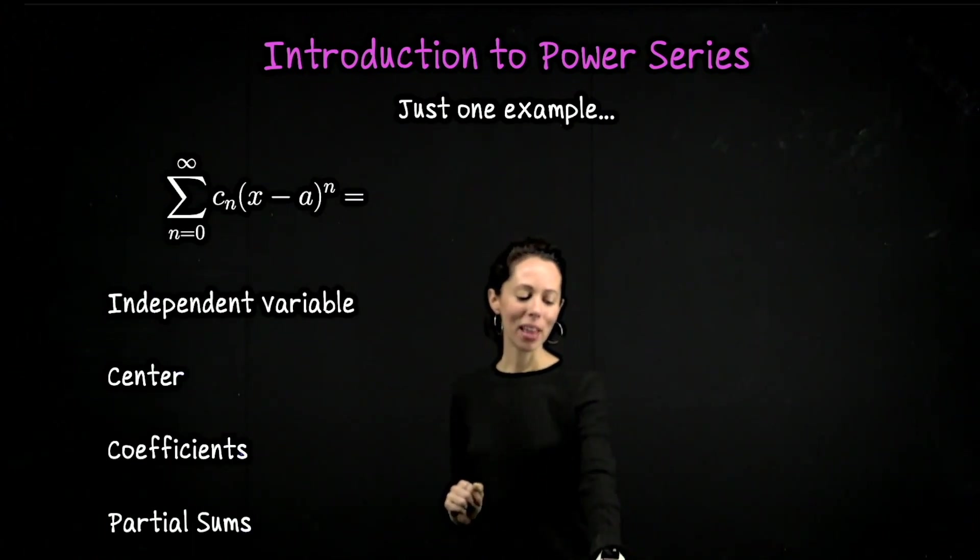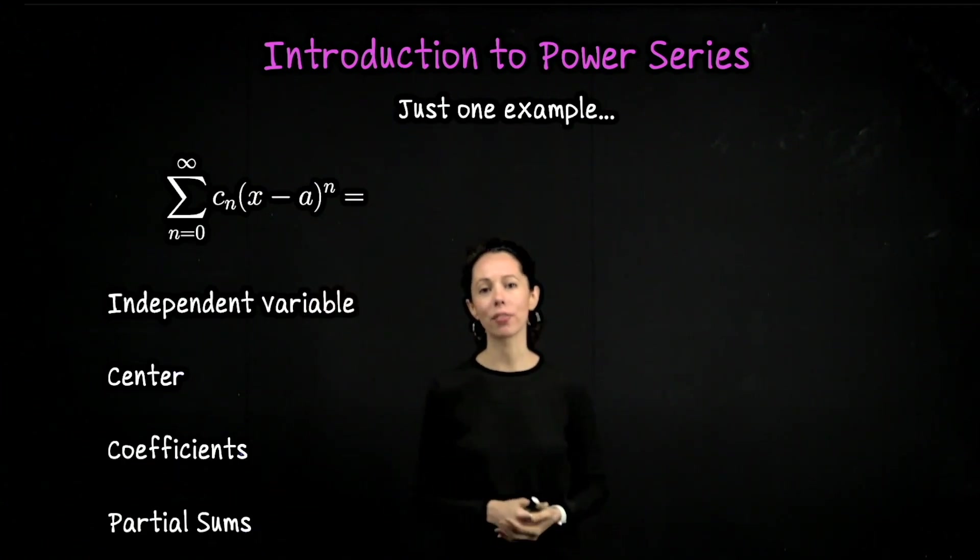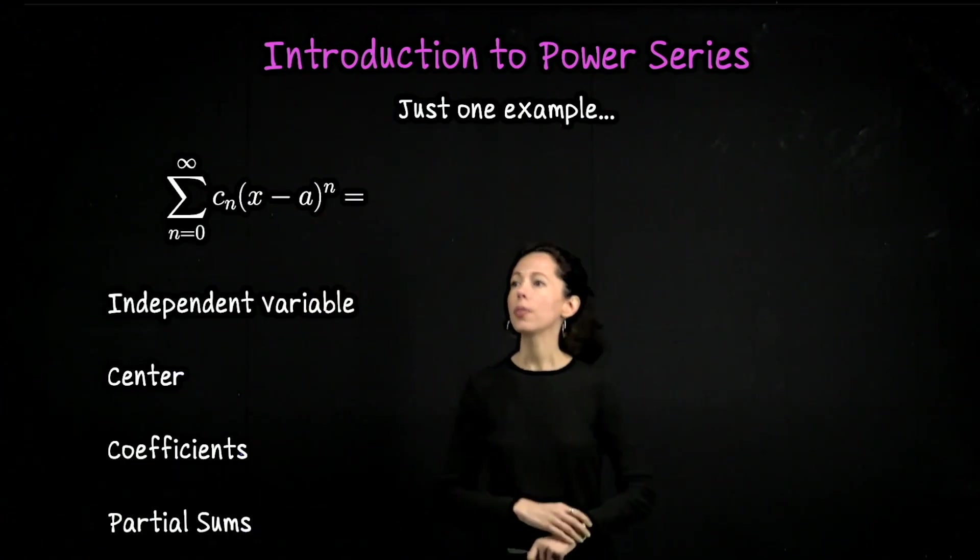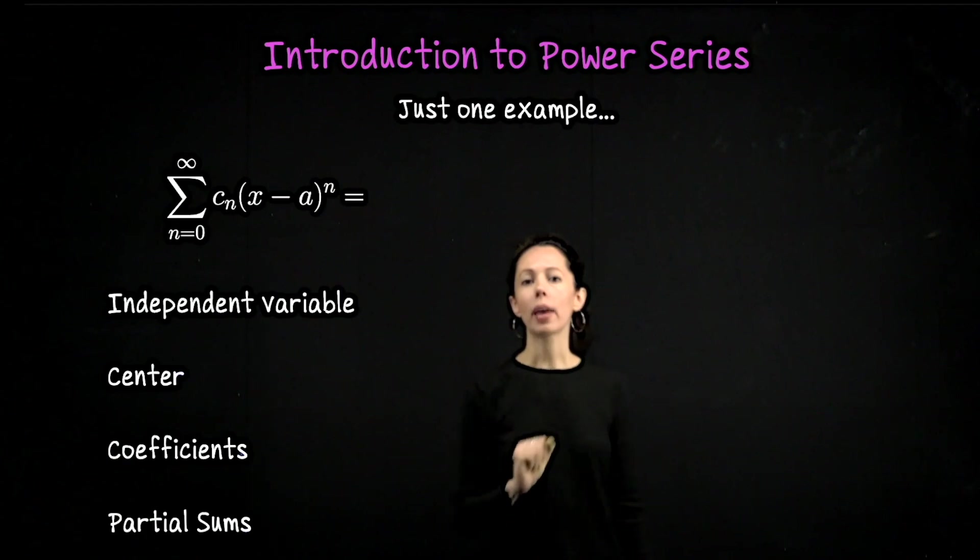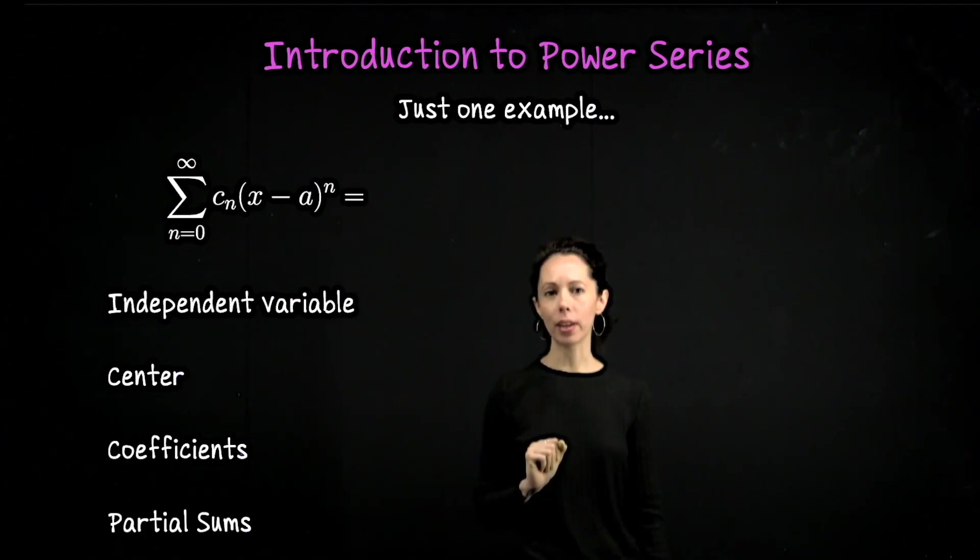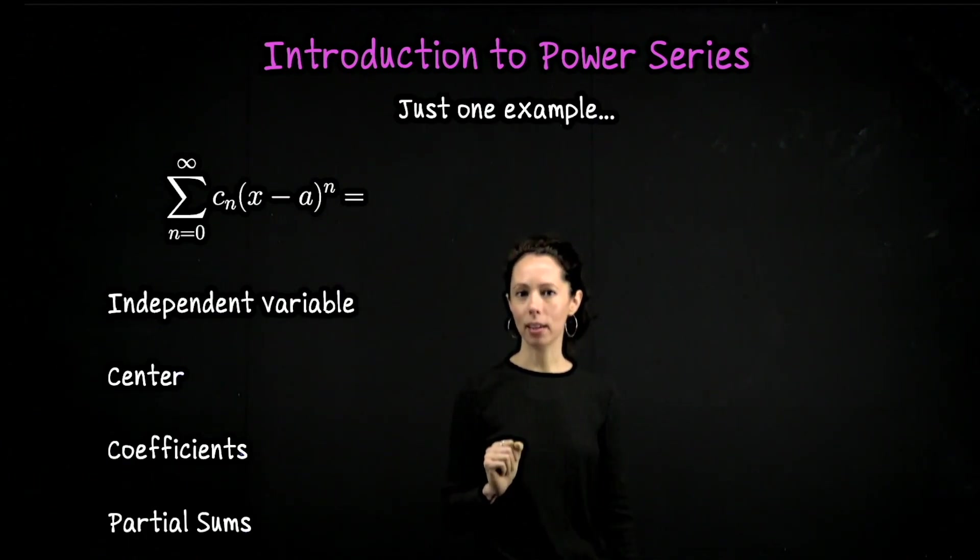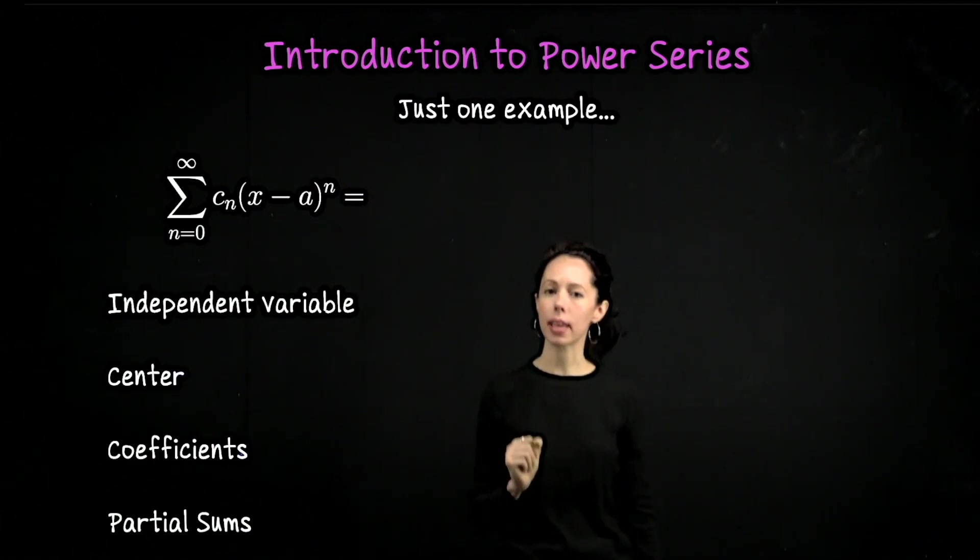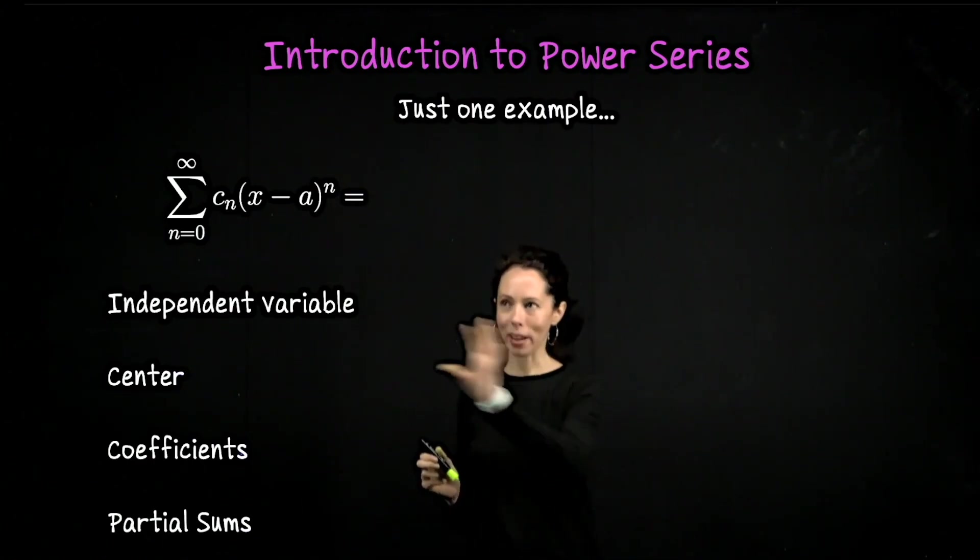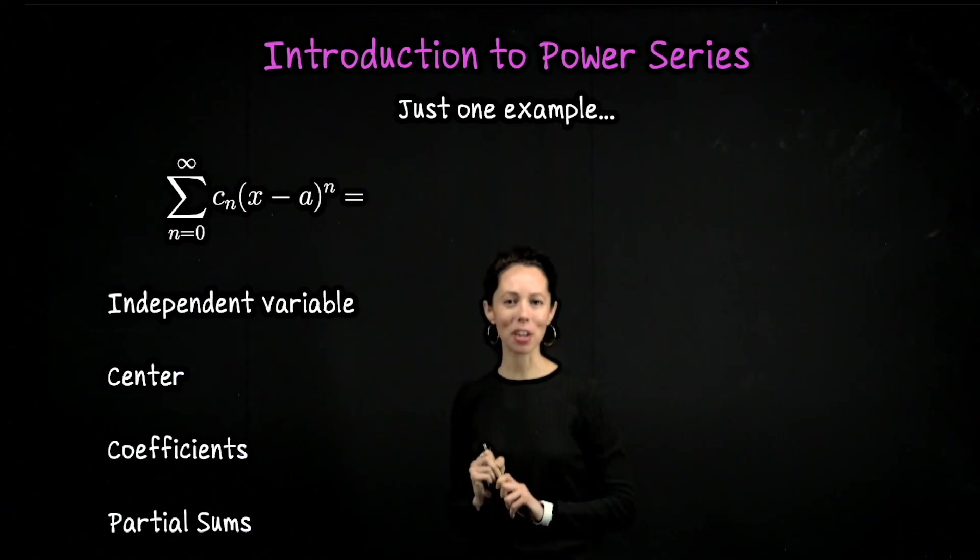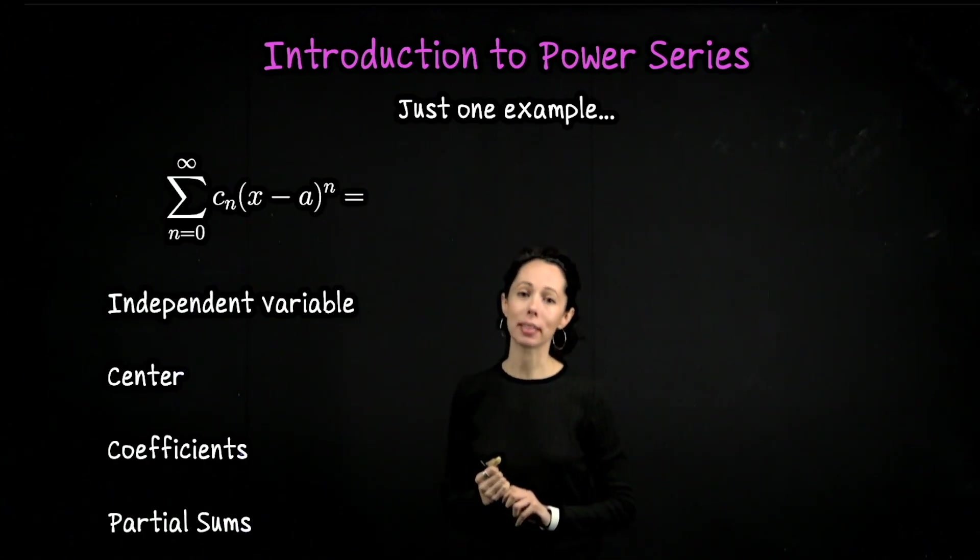Before we look at that example, let me talk through the notation for a power series. This is the notation here. We have the sum from n equals zero to infinity of c_n times the quantity (x - a) to the n. Let me write this out using this sigma expression and then we will talk through what each piece is.